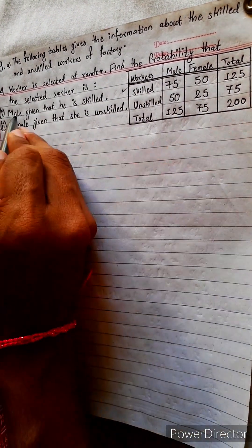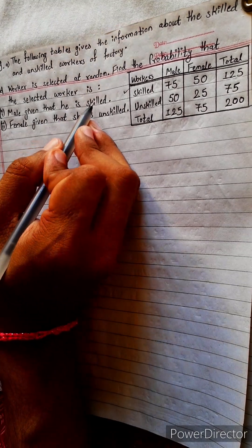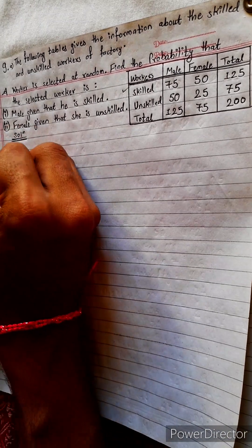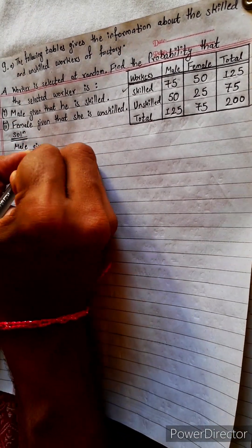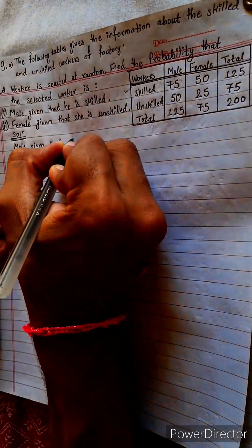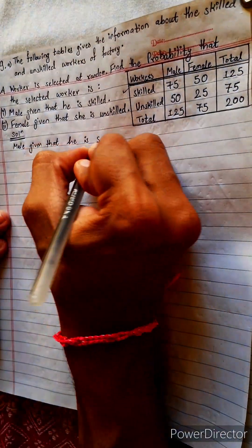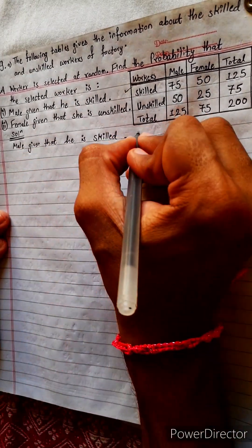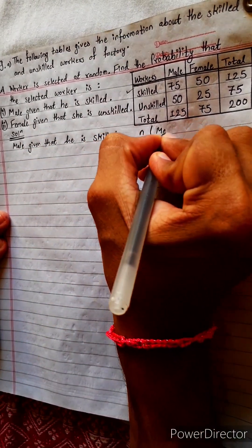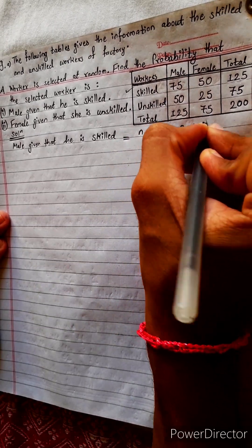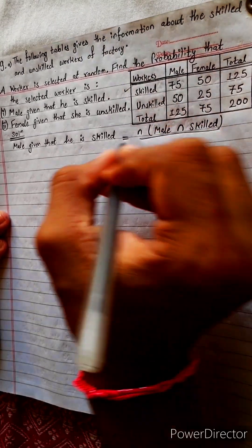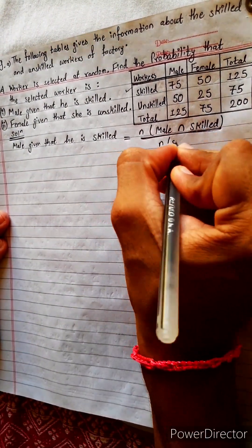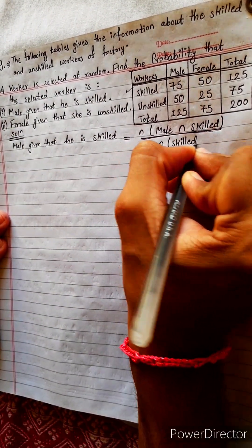Now what we need is: P(Male | Skilled). Let's write the solution. This is asking for the number of males who are skilled, divided by — 'given that' means division — divide by the number of skilled. This is what is being asked.